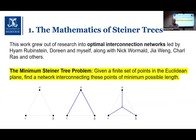This work grew out of research being done initially by Hyam Rubinstein and Doreen Thomas on what are known as minimum Steiner trees. I also joined the group, along with others such as Nick Wormald and Jia Weng later on. There's been a team of us working in this area of minimum networks.